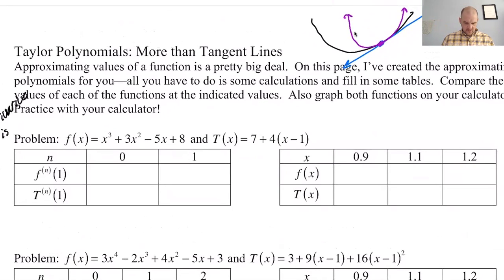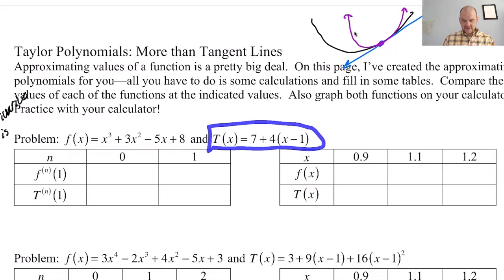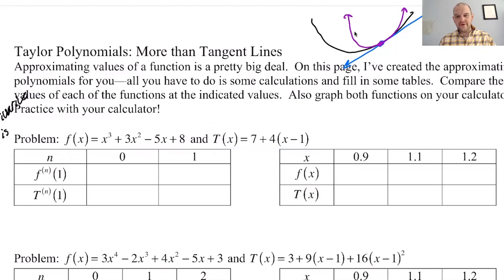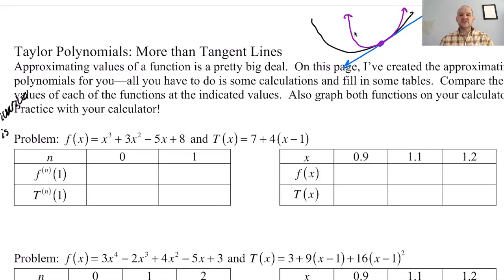I'm going to switch over to the calculator. We have f(x) which I'll define, and T(x) which is our Taylor polynomial. Notice that this Taylor polynomial - whatever a Taylor polynomial is - is the tangent line. If we find the derivative and the value of the function, we'll find out this is the tangent line. A tangent line is actually the first degree Taylor polynomial. You've been writing Taylor polynomials for ages, but they've all been first degree.